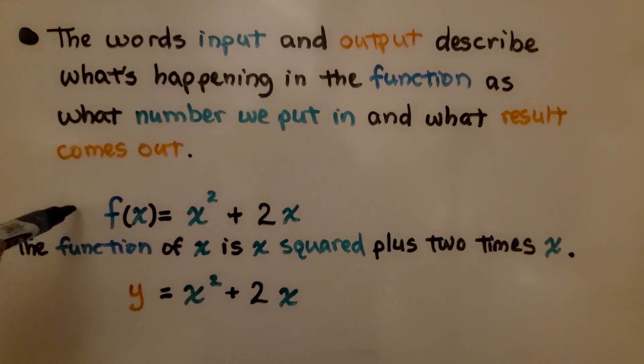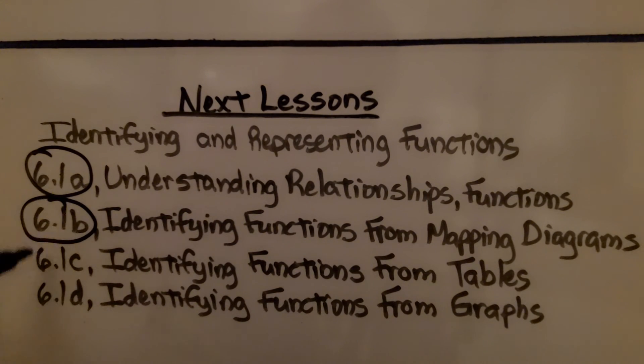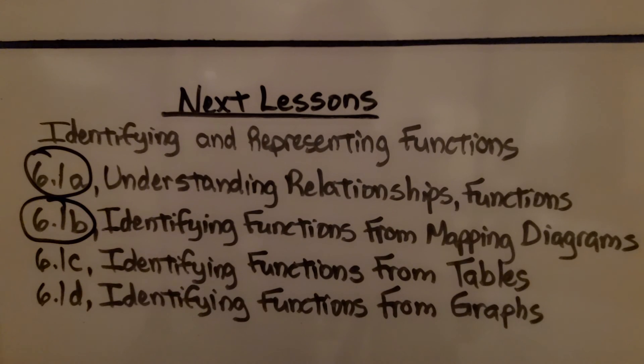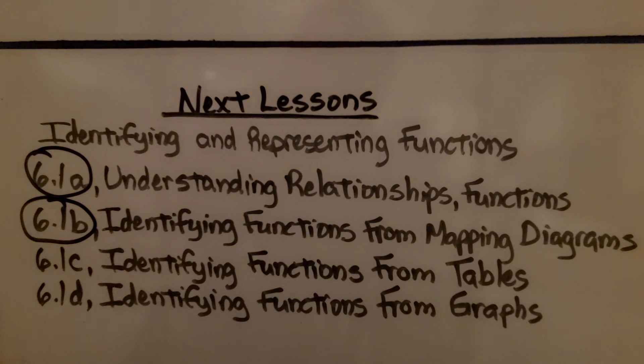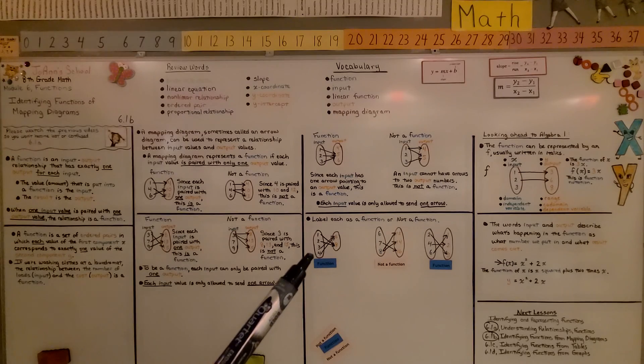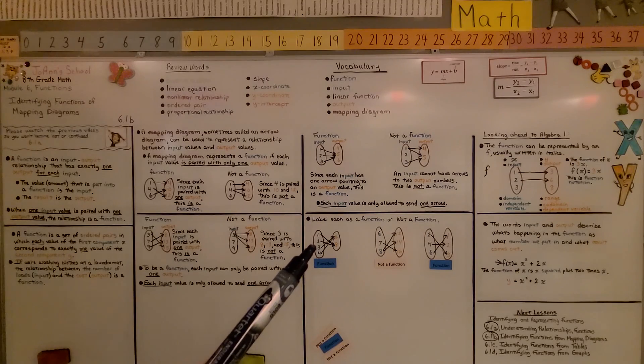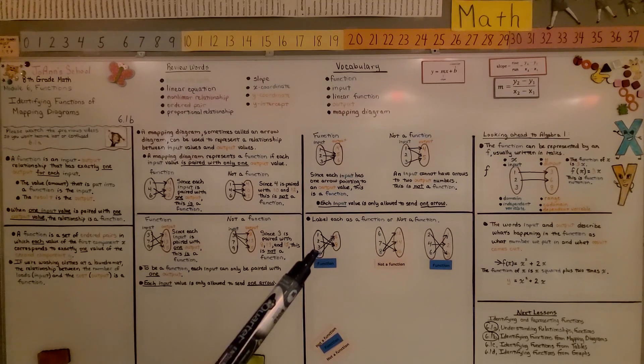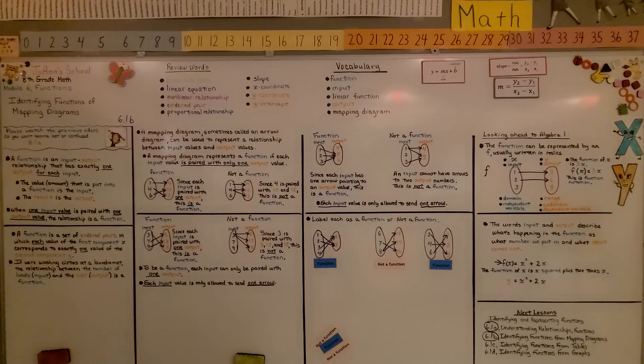Hopefully when you see equations like this next year, you're going to say, I remember that. It's not so scary. Okay, we finished the second part. We're going to move on to 6.1c, identifying functions from tables. Just remember, when you're coming out of the input value, each input value is only allowed one arrow each, okay? Have a great day, and join me for the third part of the lesson. Bye.